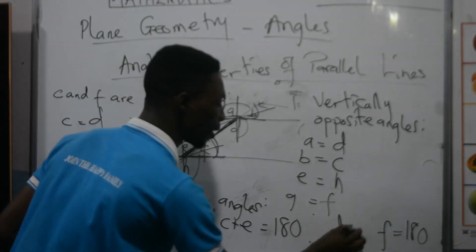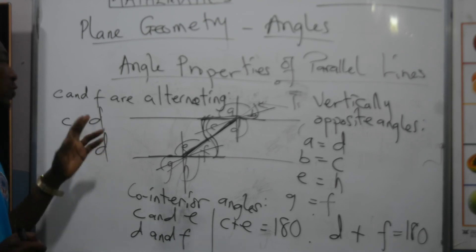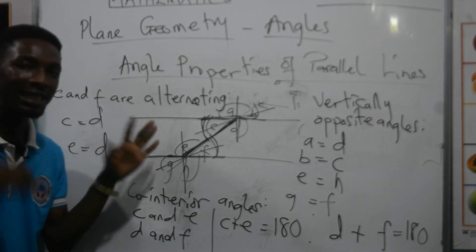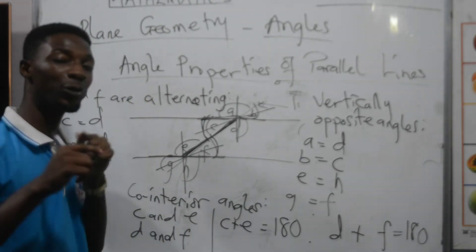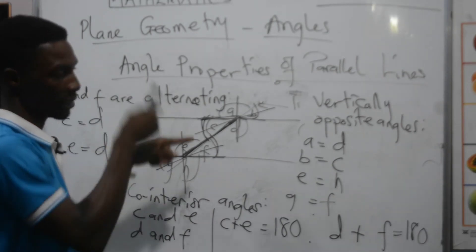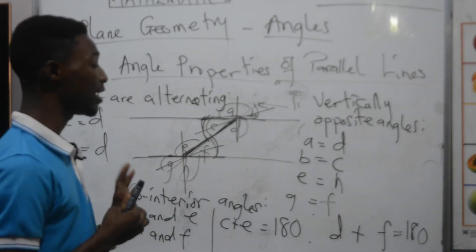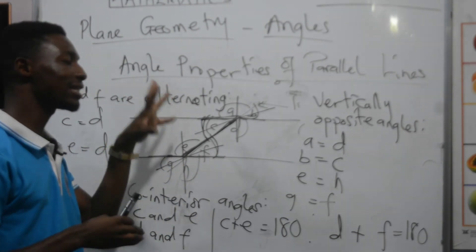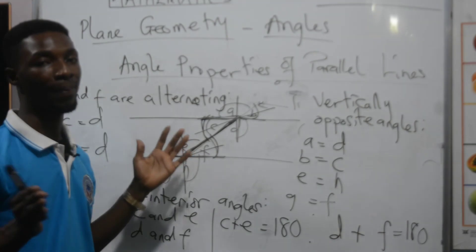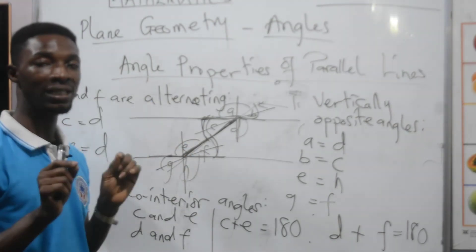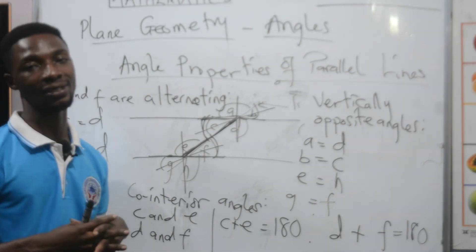To summarize the angle properties of parallel lines: corresponding angles occupy the same relative positions and are equal; alternating angles are formed within a Z shape and are equal; vertically opposite angles are directly opposite each other and are equal. Co-interior angles are formed within the same enclosure — they are not equal, but their sum always yields 180 degrees.